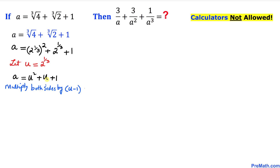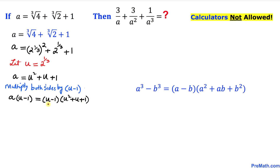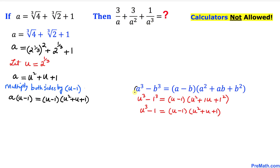Let's go ahead and multiply both sides of this equation by u minus 1. The left hand side becomes a times u minus 1, and on the right hand side we get u minus 1 times u squared plus u plus 1. Now let's focus on this right hand side. We are going to use the famous difference of two cubes identity. If we let a equals u and b equals 1, then u minus 1 times u squared plus u plus 1 can be written as u cubed minus 1.